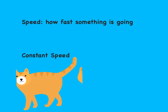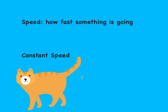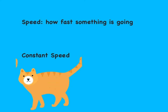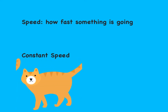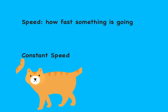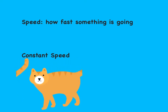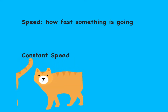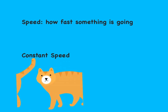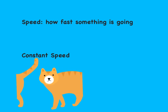Let's look at speed first. Speed is just how fast an object is going at a given moment in time. The cap below is moving towards the left at a constant speed. When we say constant speed, this means that the object is not speeding up or slowing down, but it's remaining the same.